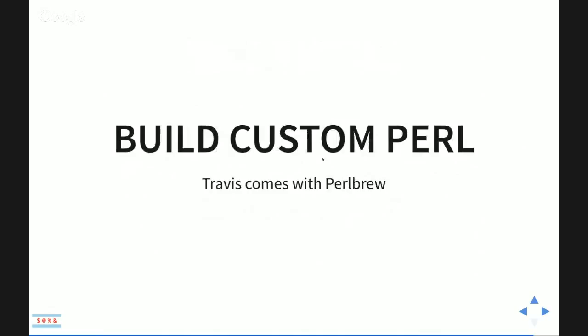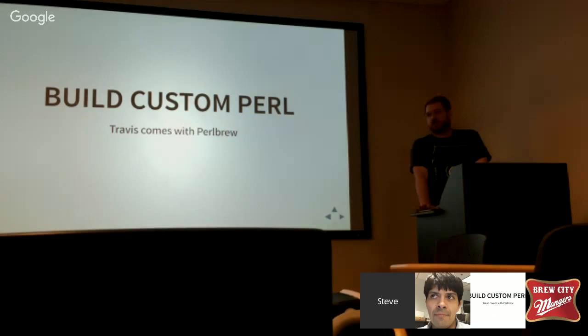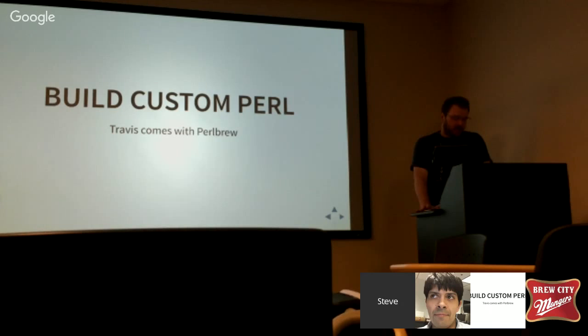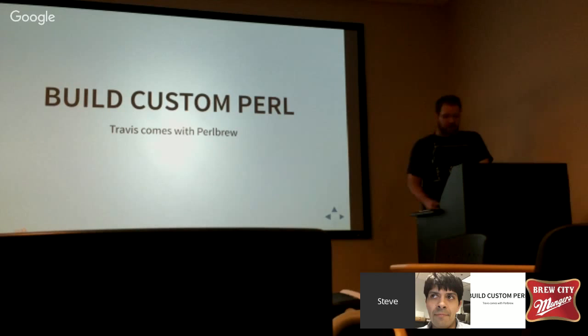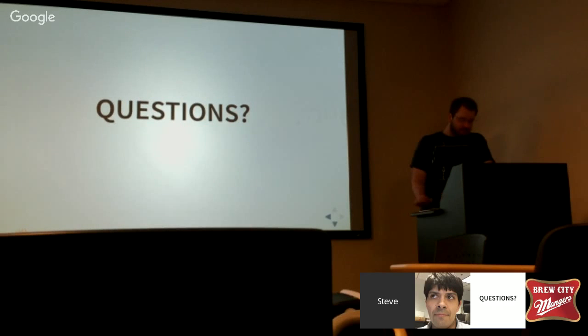There are a lot more ways you can make the most out of Travis. You can actually build a completely custom Perl. Travis comes with Perlbrew, so if you want to set any compiler flags, install any modules, use the debugging flag — maybe you're debugging a memory problem in Perl itself — you can do that.